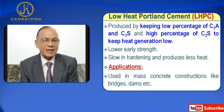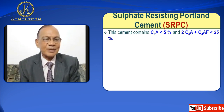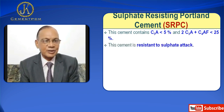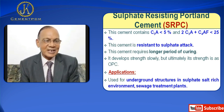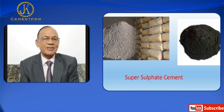Next is Sulphate Resisting Portland Cement, SRPC. This cement contains C3A less than 5% and 2×C3A + C4AF less than 25%. This cement is resistant to sulfate attack. It requires a longer period of curing and develops strength slowly, but ultimately its strength is comparable to OPC. Applications: used for underground structures in sulfate-rich and salt-rich environments, and for sewage treatment plants.